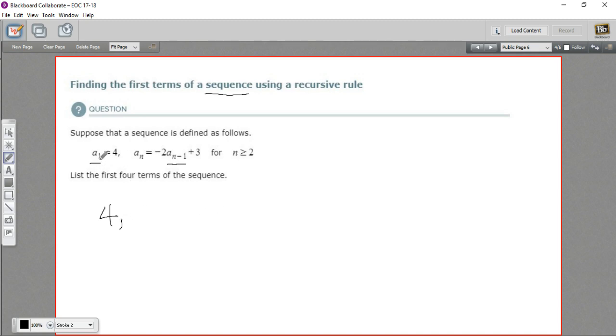This little subscript number 1, that's the position of this element in the sequence. Now, a sub n, when you see that, what follows is a rule for finding any element. If you put in a 2 for n, that's going to be the second element. If you put in a 3 for n, that's going to be the third element.